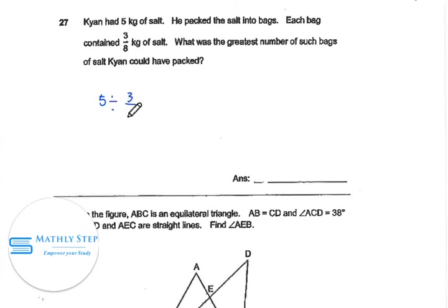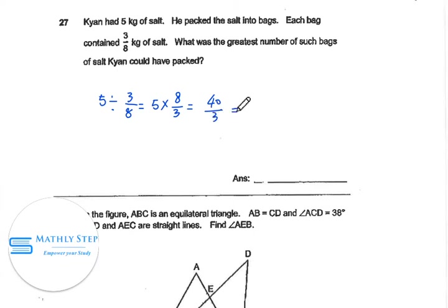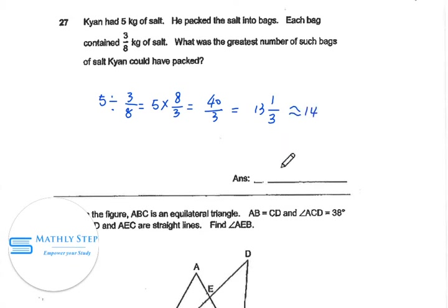Each bag contains three-eighths kg, so we calculate five divided by three-eighths, which equals forty over three, equal to thirteen and one-third bags. We know that we cannot have one-third of a bag, so we need to use thirteen bags to pack. The answer is thirteen.